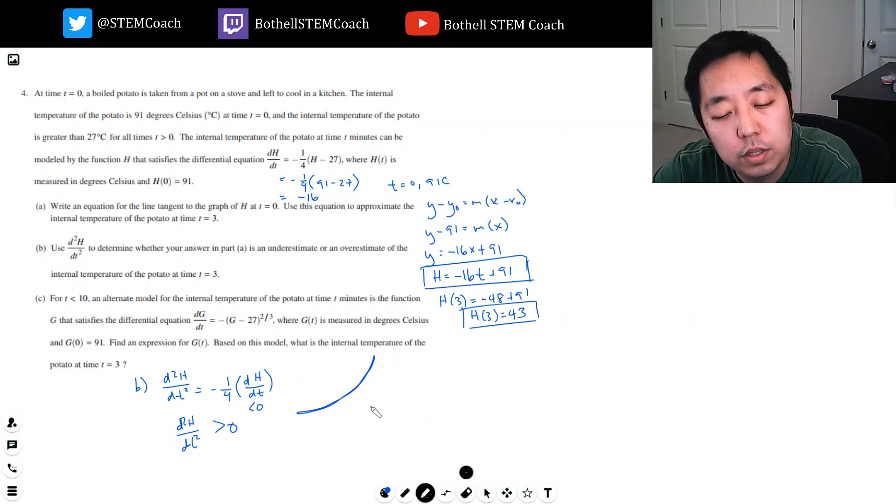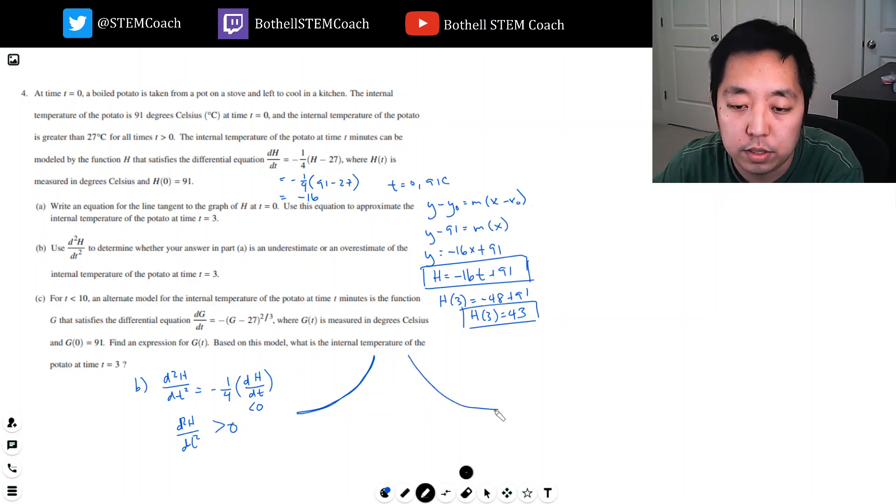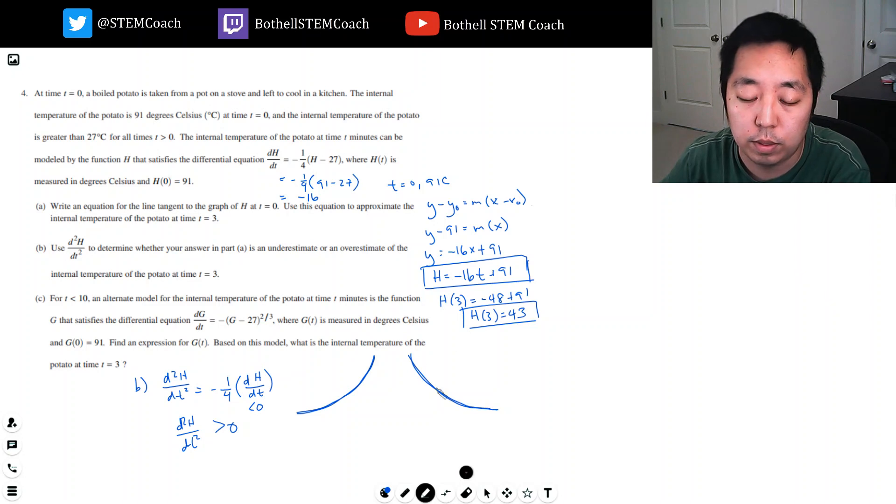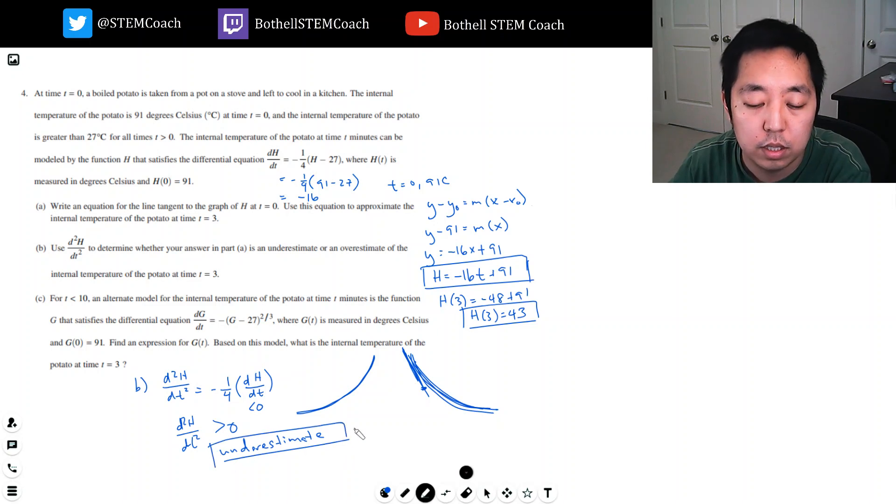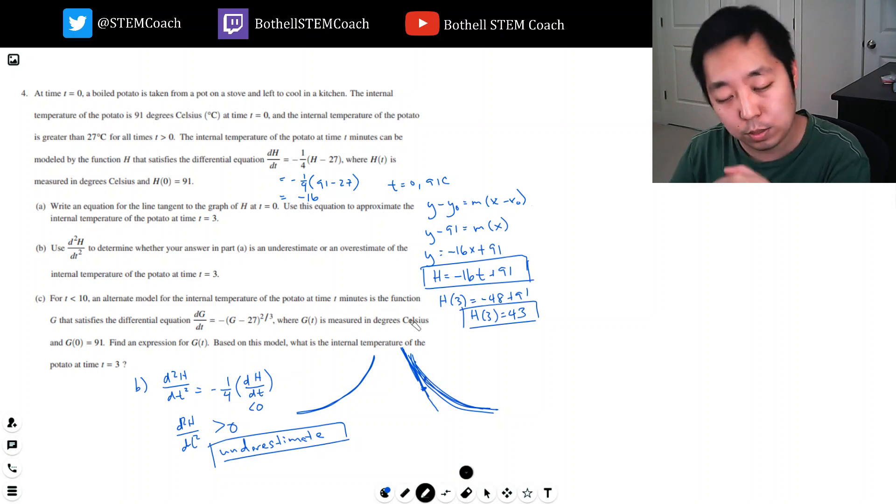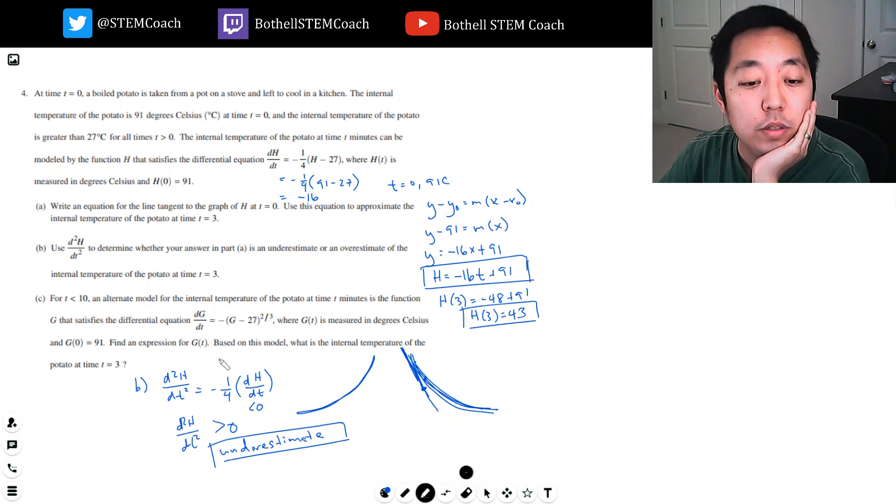The second derivative is greater than zero, which means the function is concave up. What that means is when we extrapolated our line, we're probably underestimating because the function is flattening out more. So it's an underestimate because the line we extrapolated from is below the real value, and that's because it's concave up.